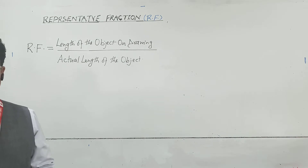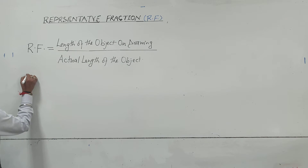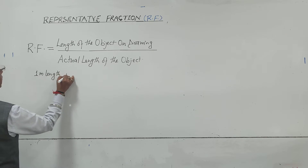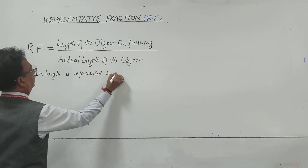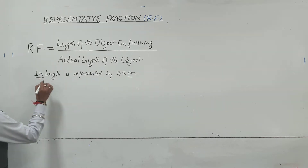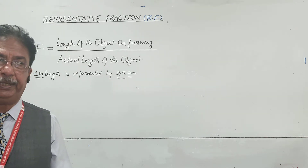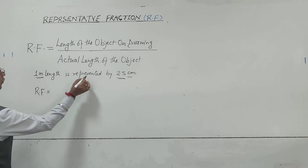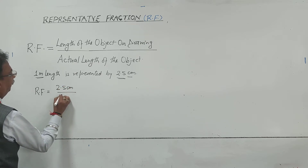In the first problem we have taken a ratio. In a map, one meter length is represented by 2.5 centimeter. So in actual the length will be one meter and that is represented by 2.5 centimeter — that is the proportion given to us. If I want to find out the RF for this particular scale, then RF will be equal to the length of the object on drawing, that is 2.5 centimeter, divided by 1 meter.